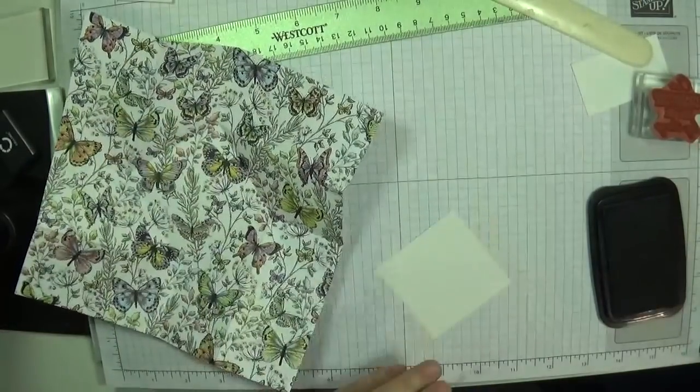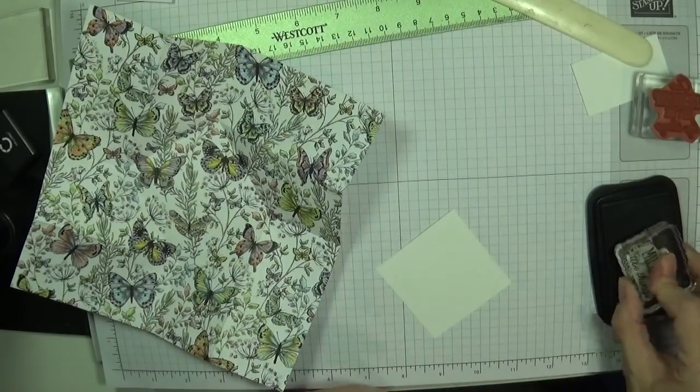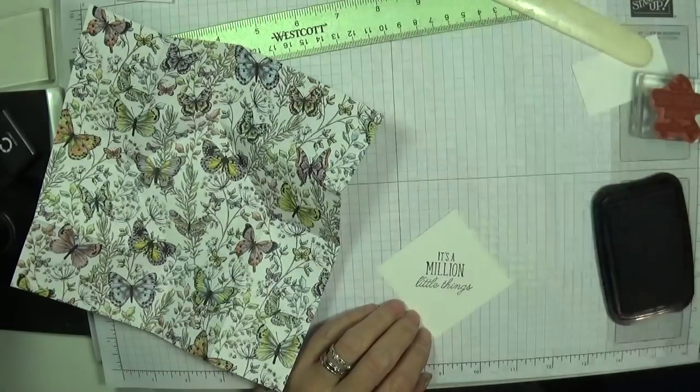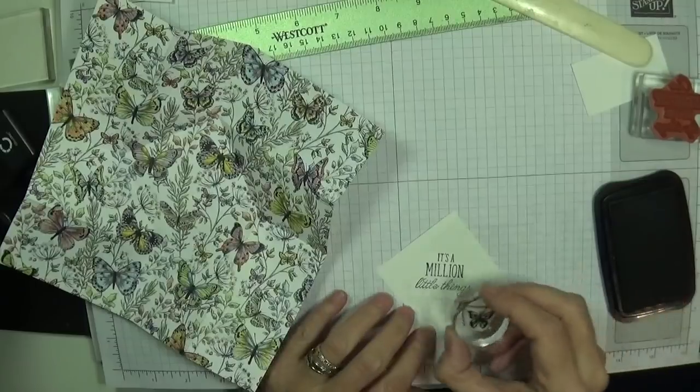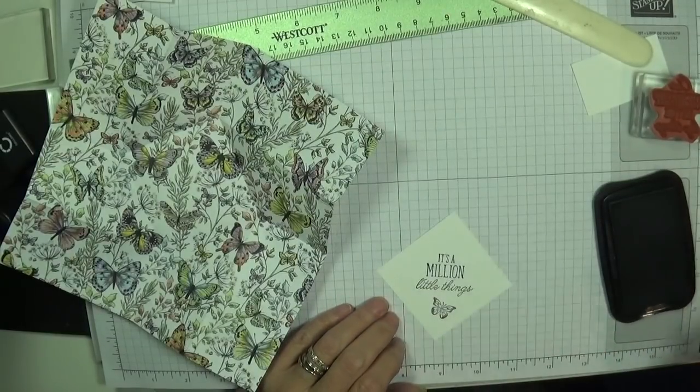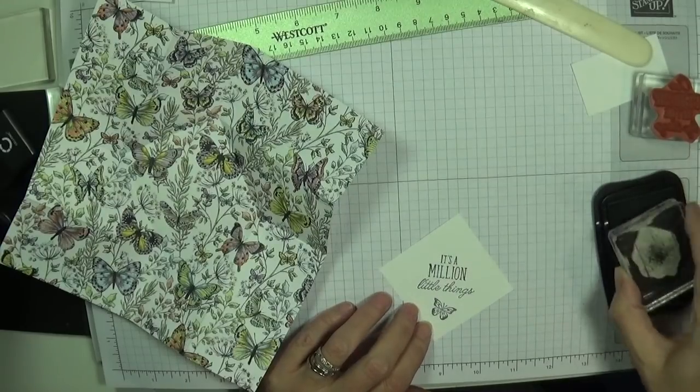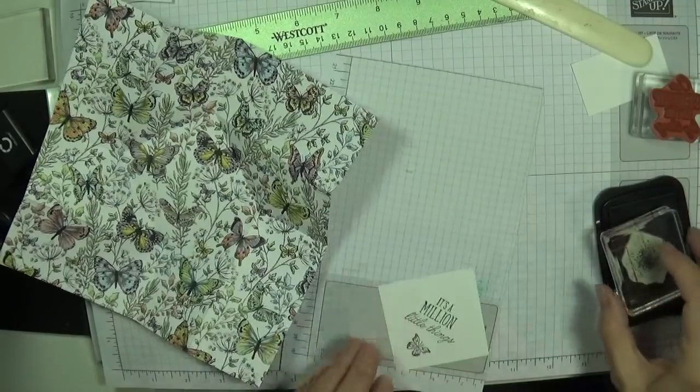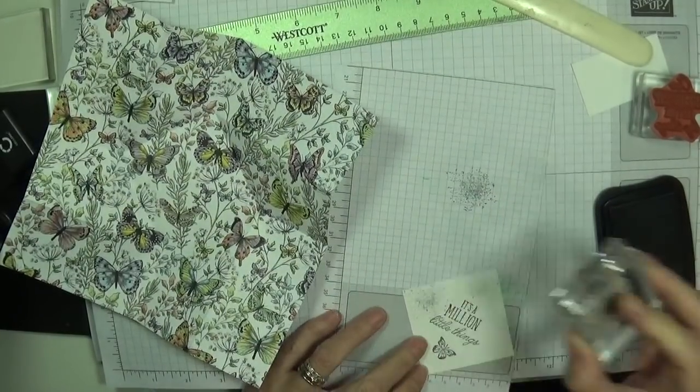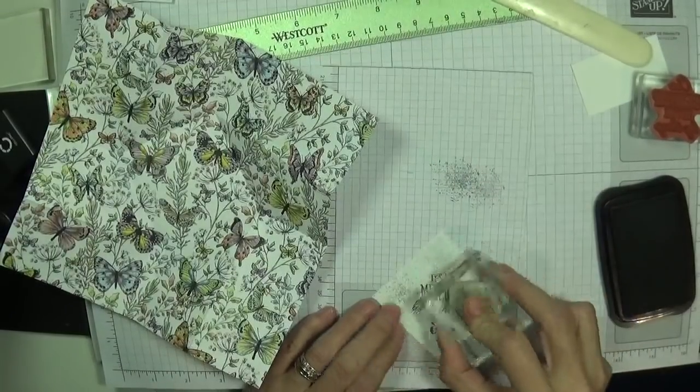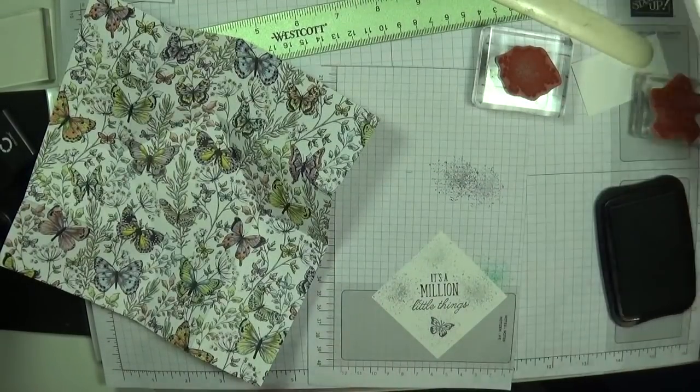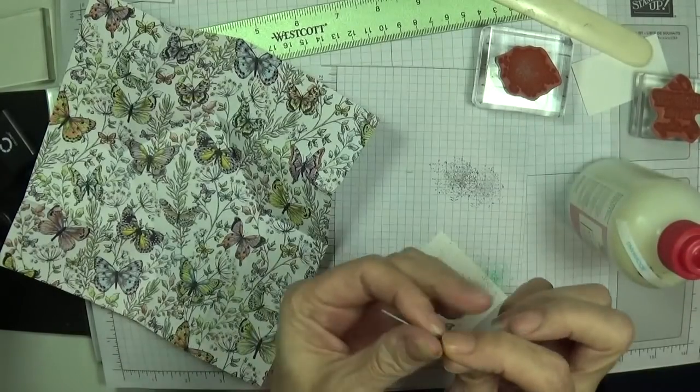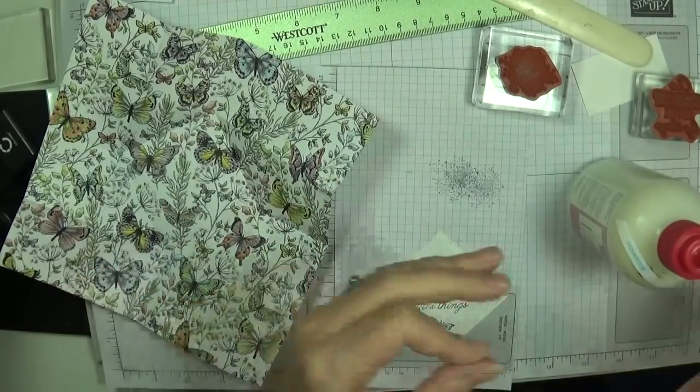I can stamp our other sentiment. Beautiful. And I've got this gorgeous little butterfly this time, just having it at an angle. And believe it or not, I'm just going to use a little piece of scrap paper and I'm going to stamp off. And stamp like that. And that's going in the centre.